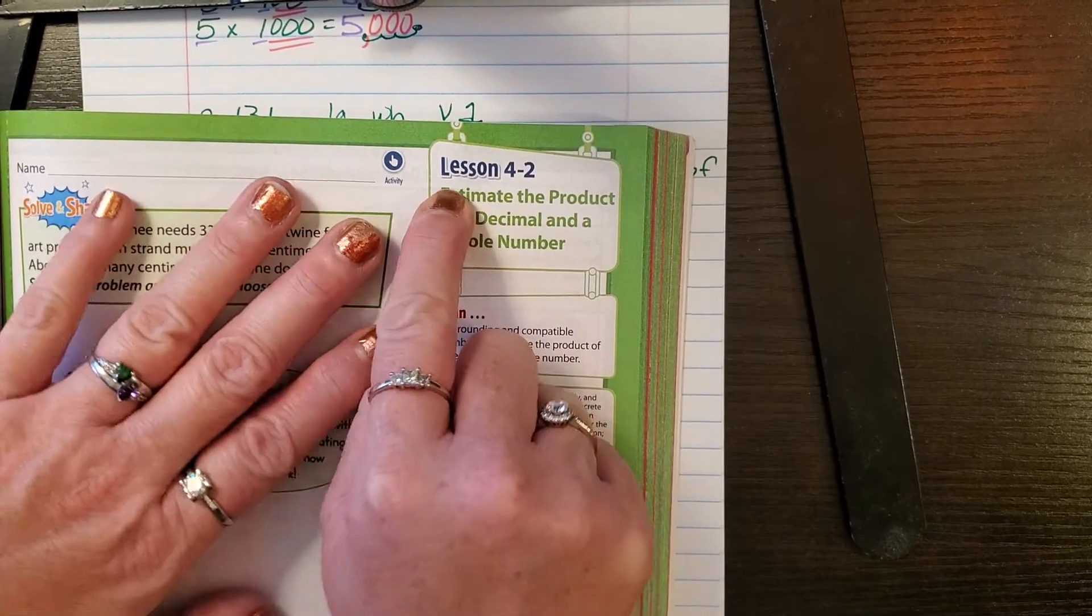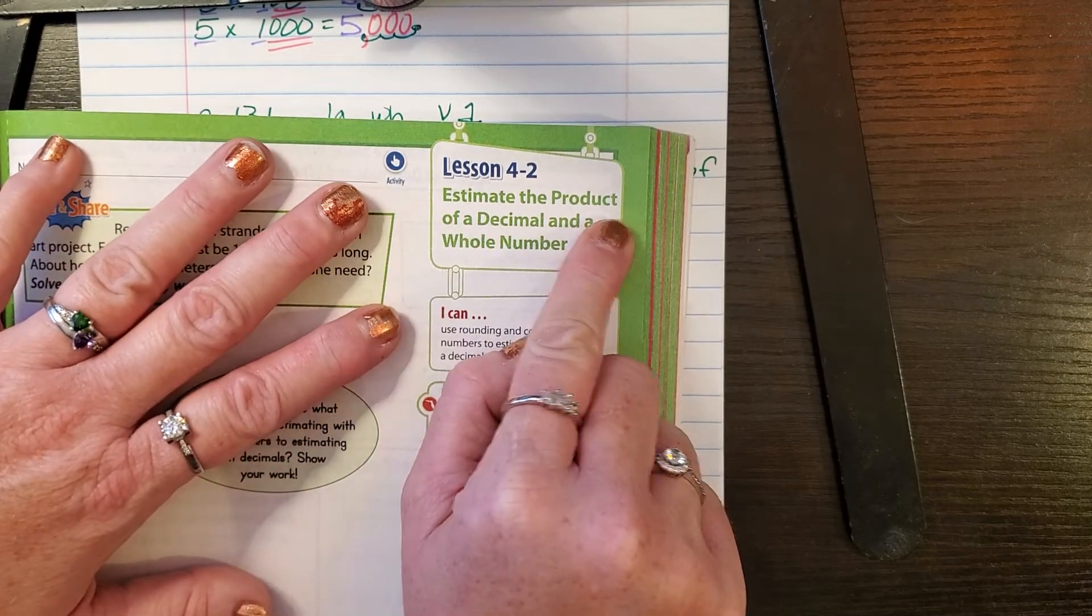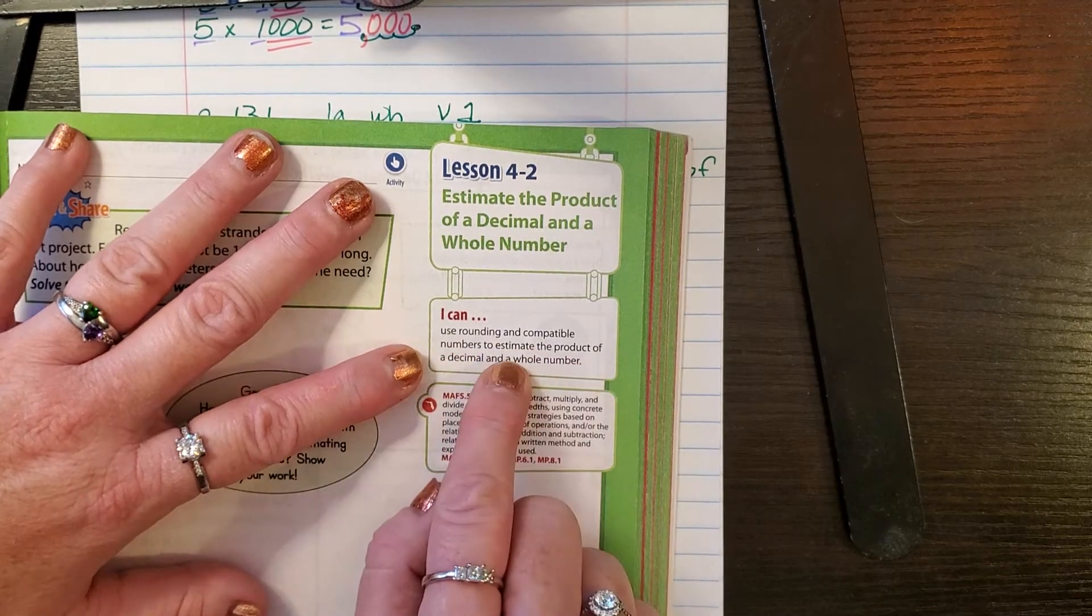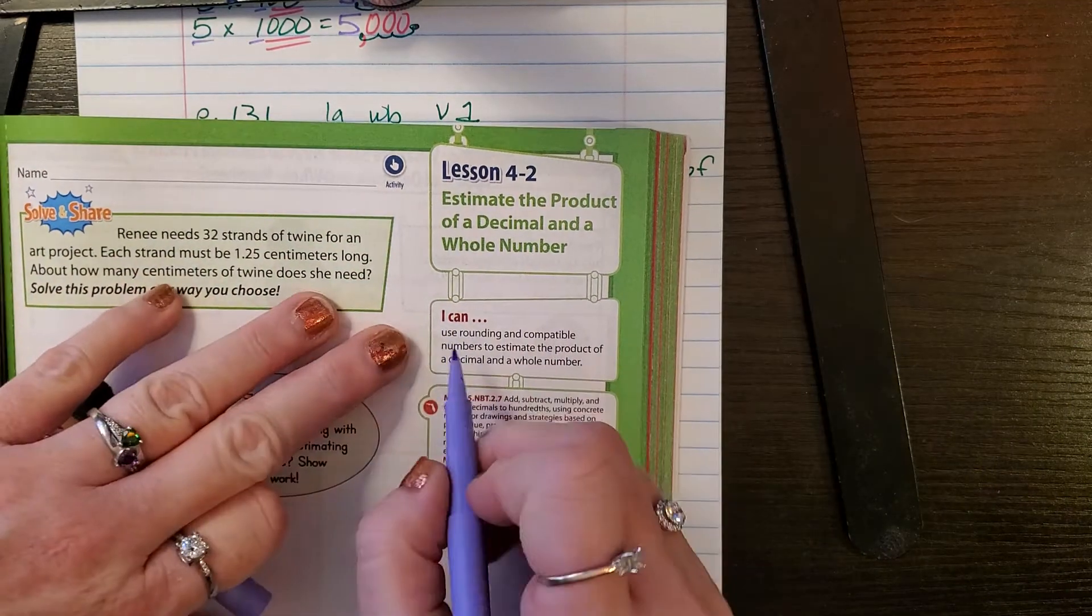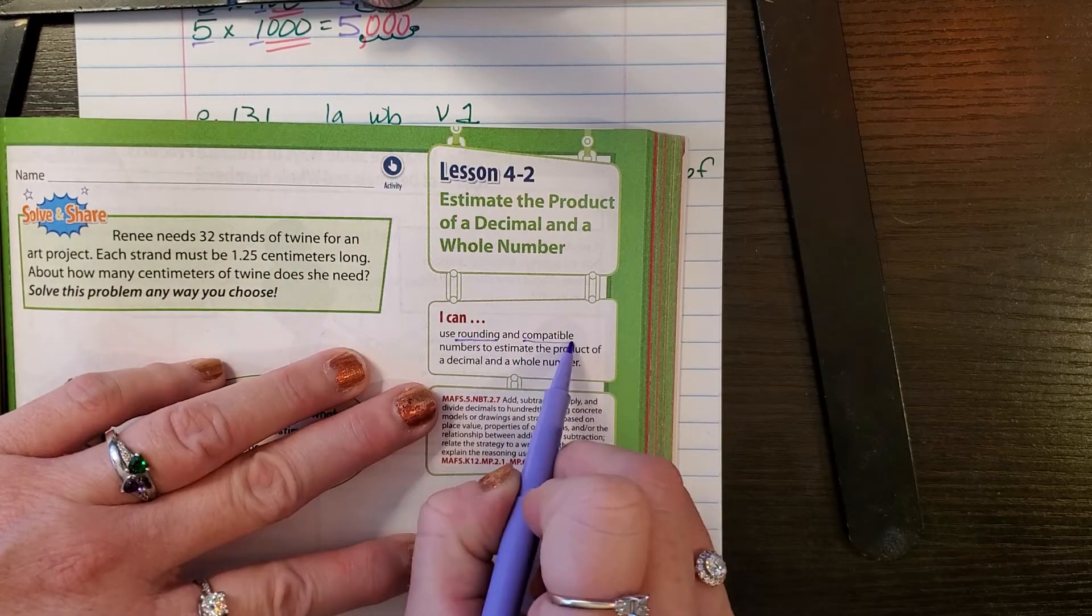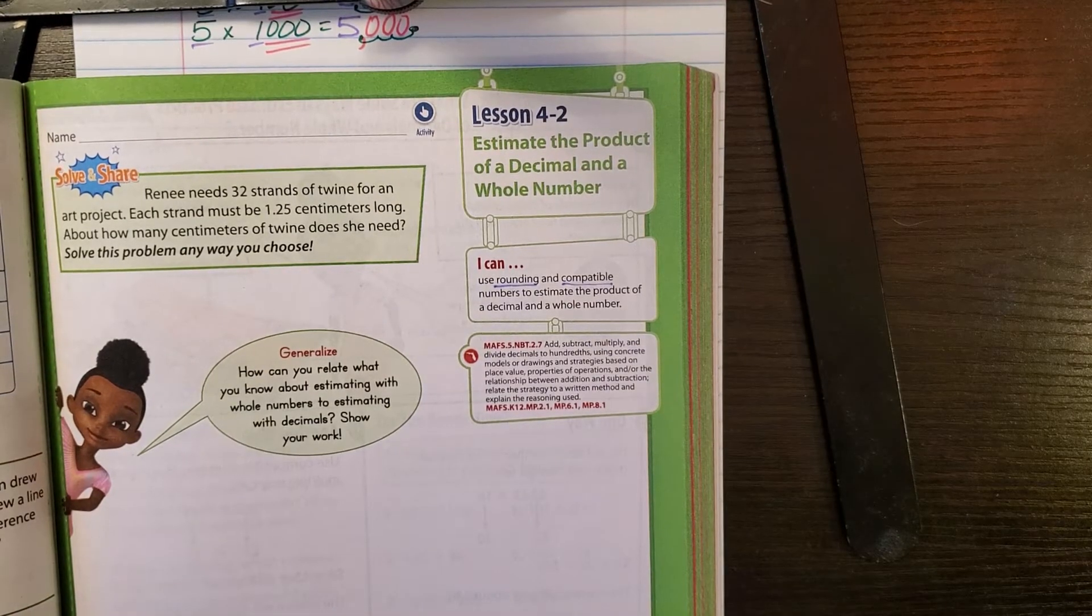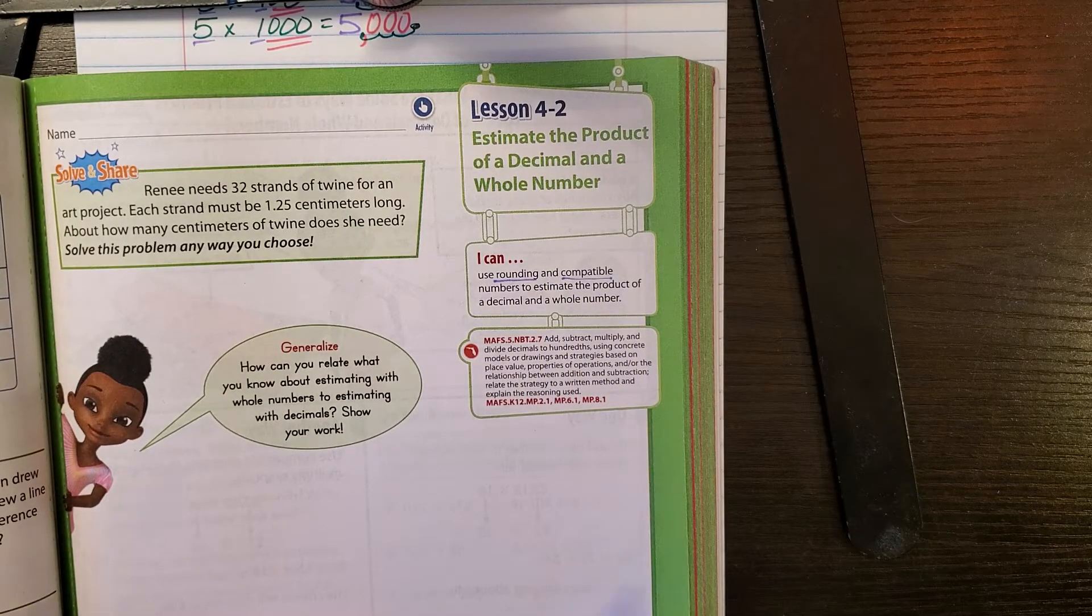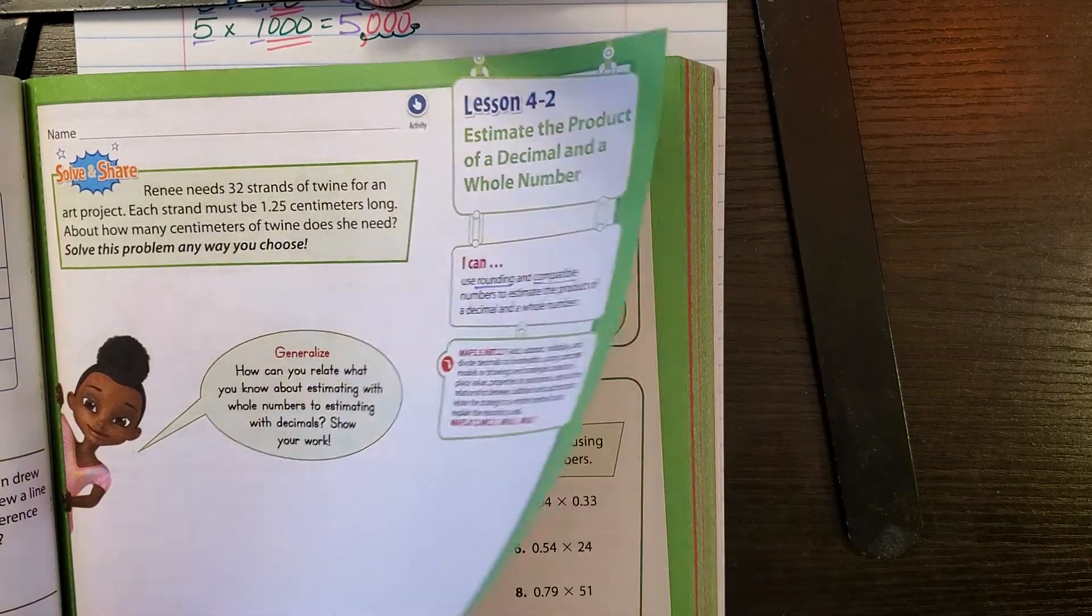Hey guys, Ms. Sirota here and we are doing topic four, lesson two: estimate the product of a decimal and a whole number. Your objective is I can use rounding and compatible numbers to estimate the product of a decimal and a whole number. Don't forget rounding—the number behind it tells the number that you want to round what to do. And compatible numbers is when we choose a number that's close to, but easy to calculate.